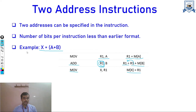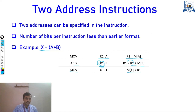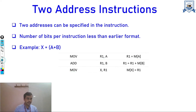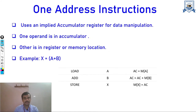With two-address instructions, the number of bits per instruction is less, but the program becomes a little more complex and longer in terms of number of lines compared to three-address instructions.